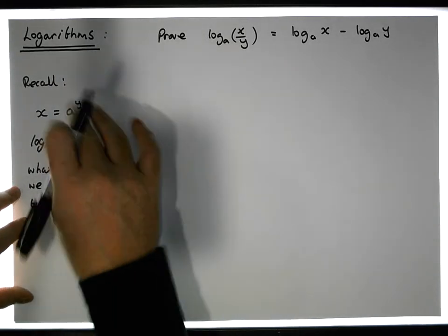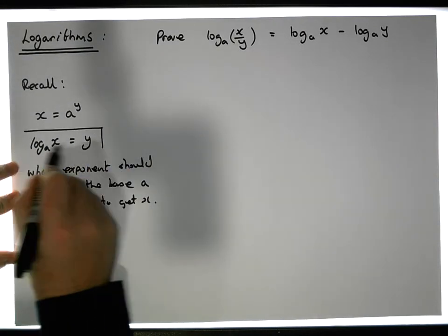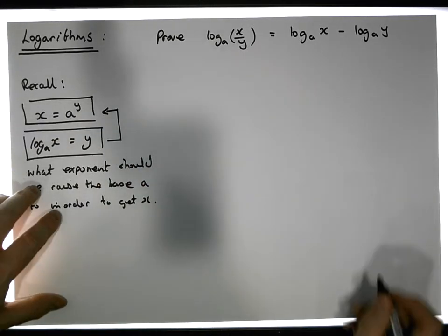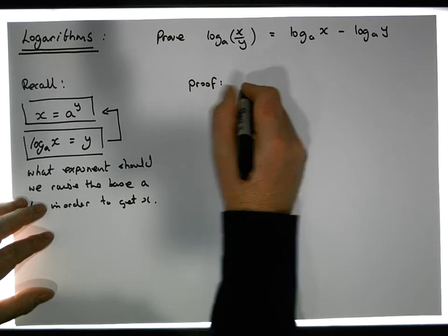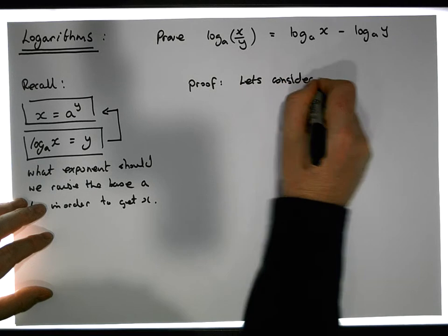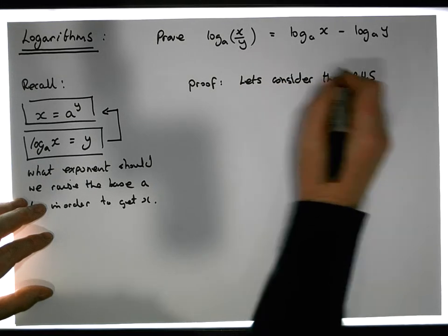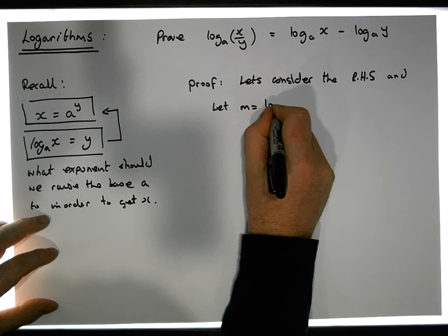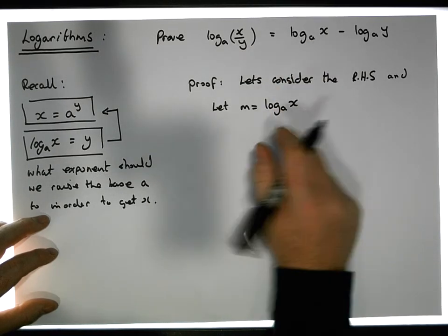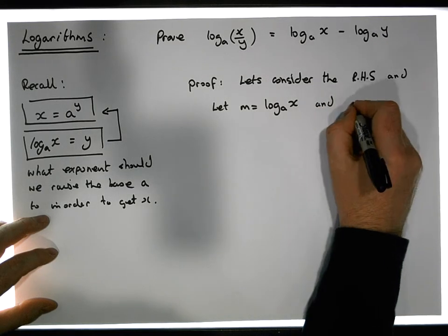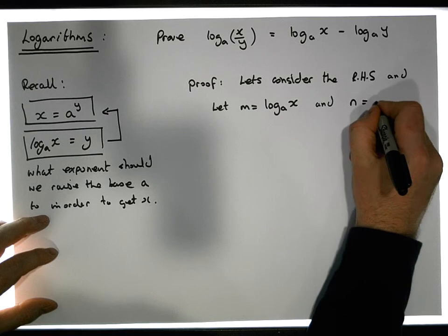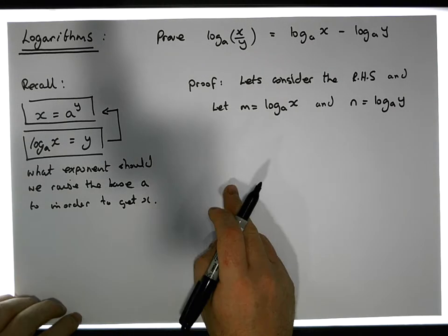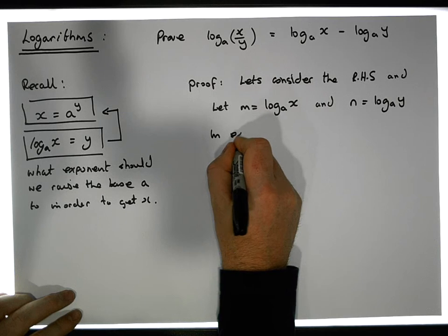We're going to use this identity — that the log of x to the base a is really asking: what exponent should we raise the base a to in order to get x? So let's do our proof. Let's consider the right-hand side of this equality. Let m equal log of x to the base a, and let n equal log of y to the base a. Now we're going to consider these in exponent form.